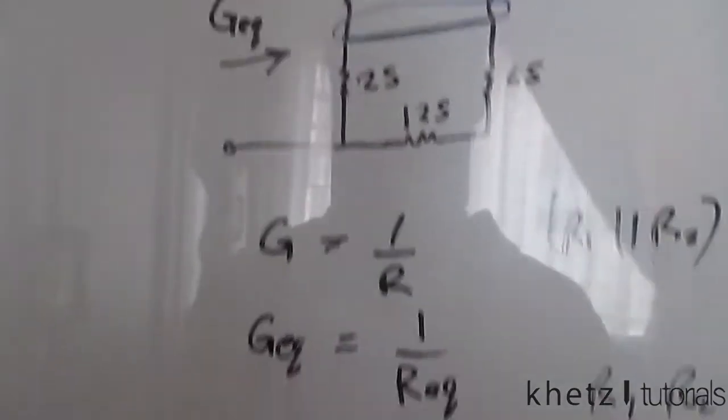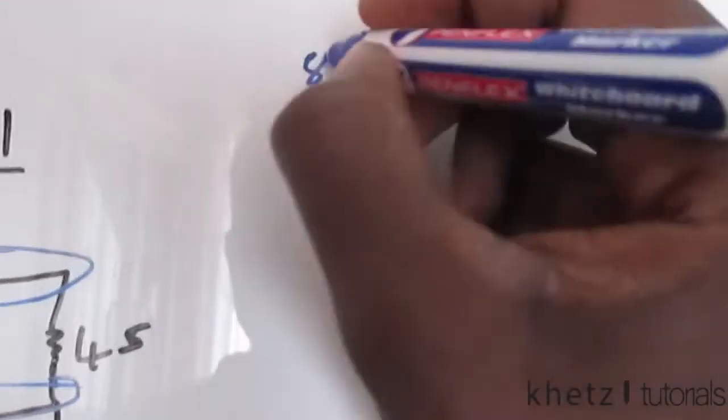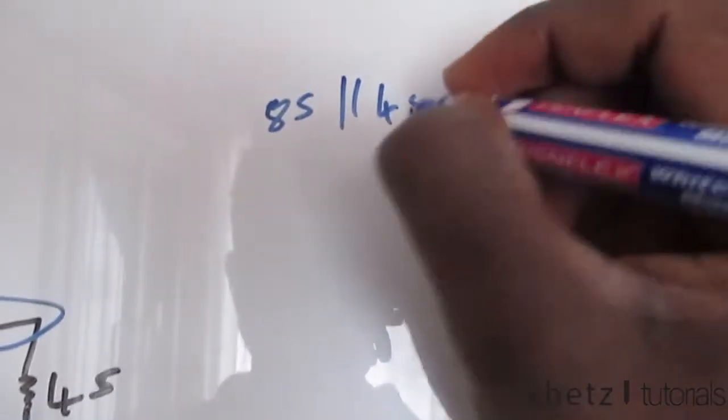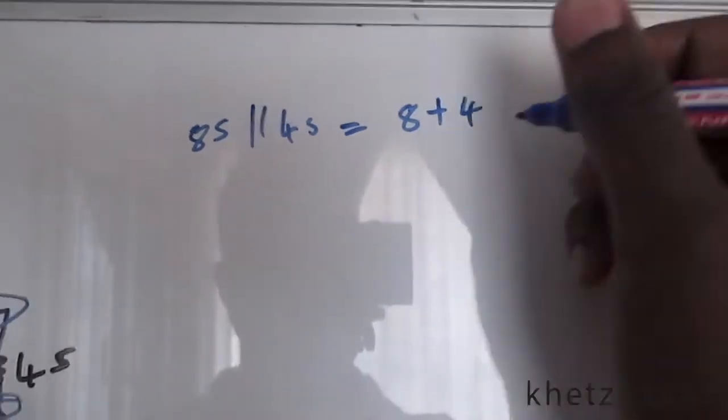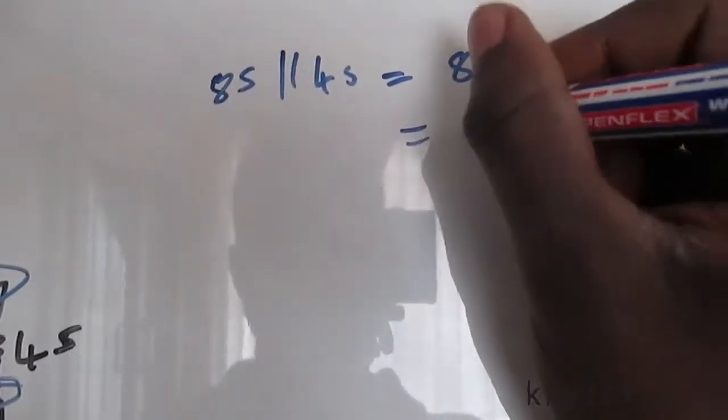So eight, let's write it down up here. So eight Siemens in parallel with four Siemens gives us eight plus four, which is 12 Siemens.